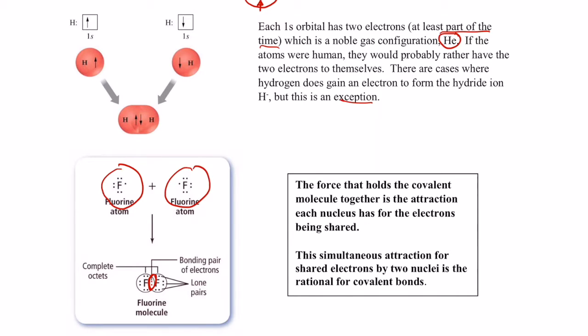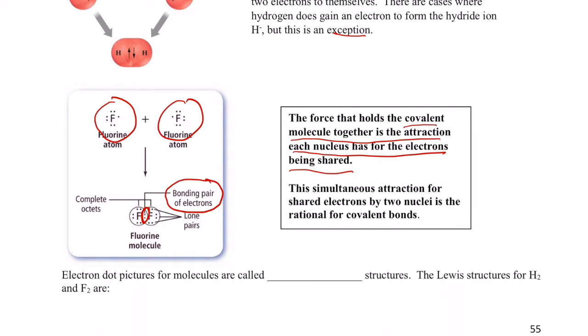That shared pair of electrons is also known as a bonding pair of electrons. When that happens, each fluorine, for at least part of the time, has an octet, four pairs of electrons in its outer level. The force that holds the covalent molecule together is the attraction each nucleus has for the electrons being shared. This simultaneous attraction for shared electrons by two nuclei is the rationale behind what we call covalent bonds.